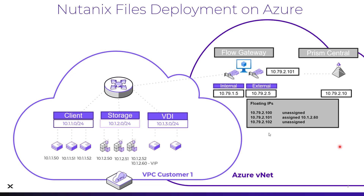The other interesting part for files on NC2 Azure is the storage network uses direct-attached. On-prem, we're using iSCSI volumes, so it makes the networking requirements a little bit easier for an Azure files deployment as well. Here, we're still using a client and storage network to mirror our on-prem environment, but we could have had just one network for both client and storage because of the way Azure works.